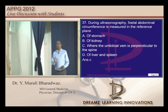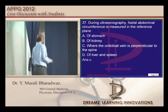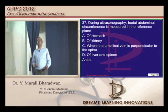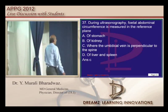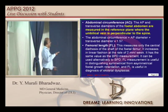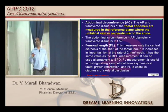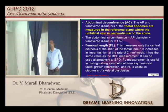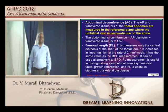What is the reference point where the fetal abdominal circumference is calculated on ultrasound? It is the umbilical vein perpendicular to the spine that is considered the reference plane. Abdominal circumference equals AP diameter plus transverse diameter multiplied by 1.57.